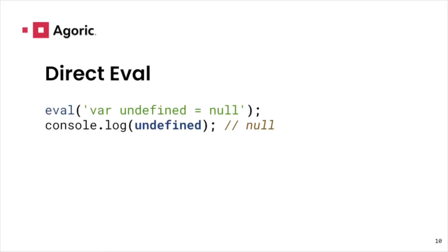The oldest and most perilous form is direct eval, where the program you run inherits the caller's scope. This is the so-called dynamic scoping eval, and it can do arcane things, like introduce variables to the caller's scope. This eval would happily allow the sirens to overshadow undefined in the scope of the caller.